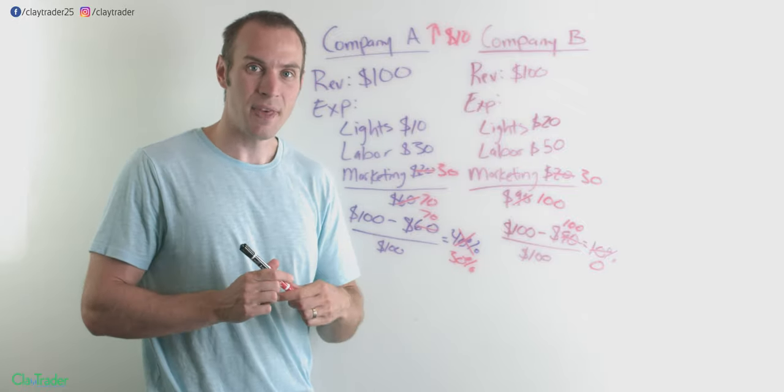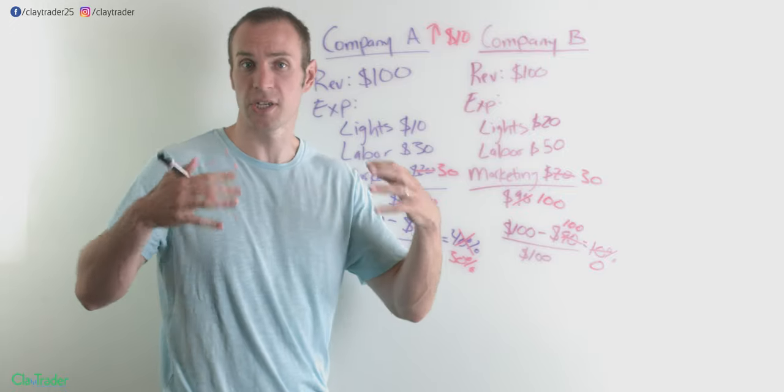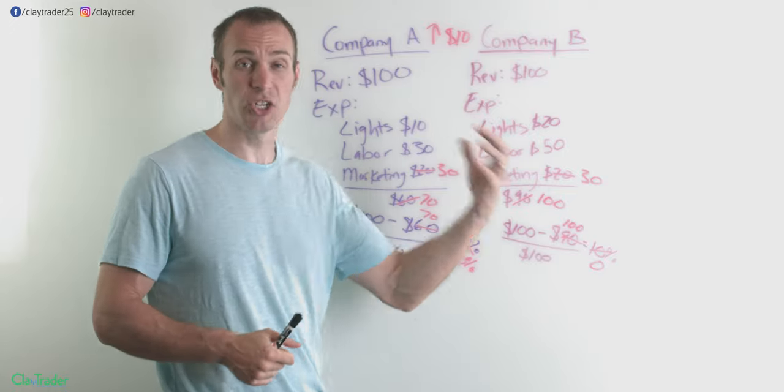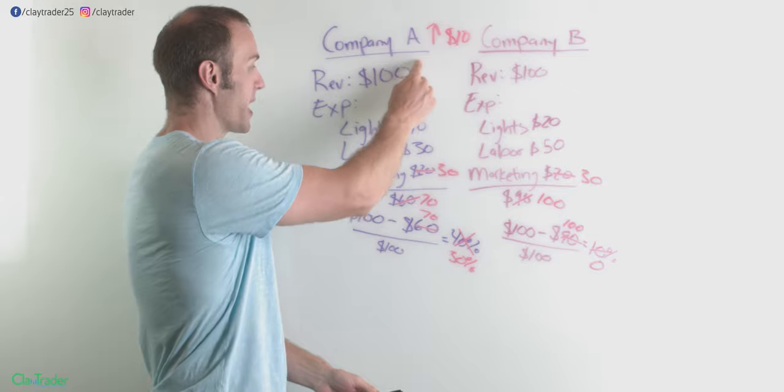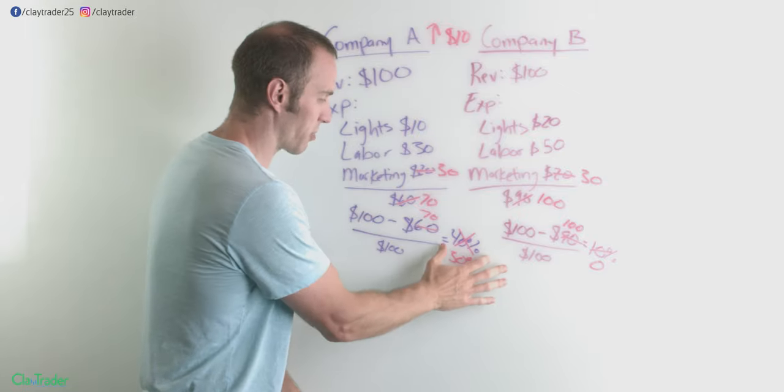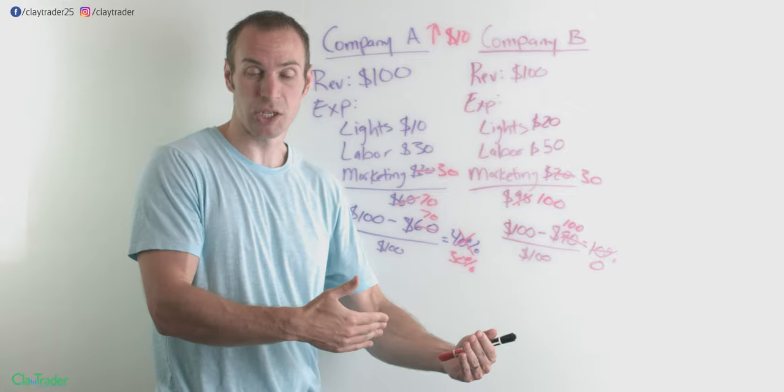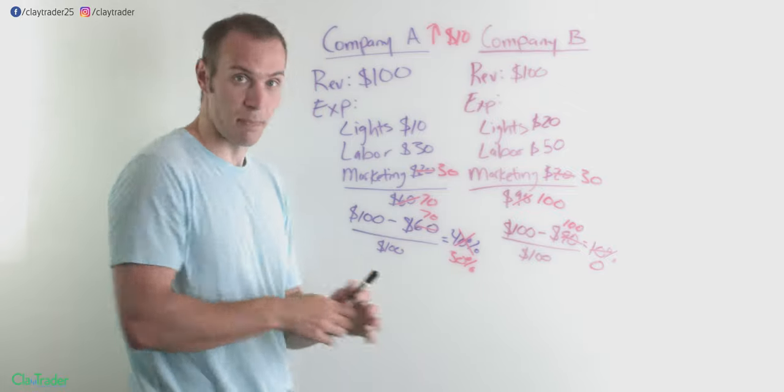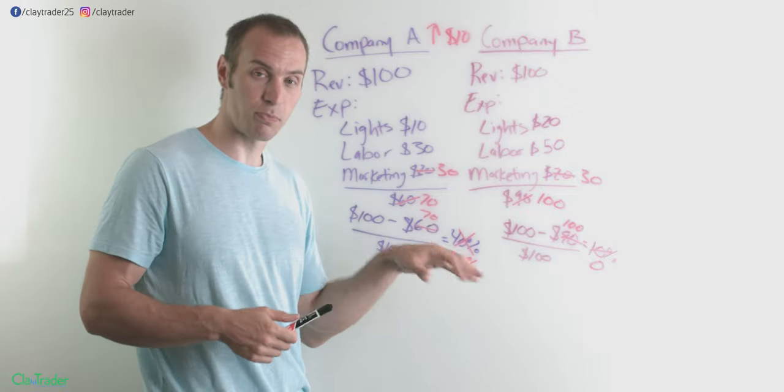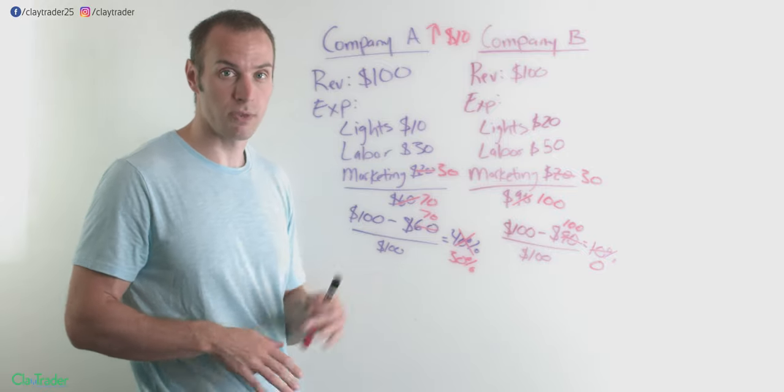The point here being that both companies wanted to increase their marketing. And both companies could do that, but because company A had more flexibility, because they had a bigger profit margin at the start, they were able to do that experimentation, and still walk away with making money. Maybe a little less money, because their profit margin was down, but walk away with making money.